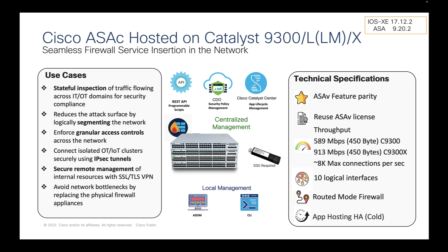In terms of performance, we can get up to 930 Mbps throughput with the 9300X models and approximately 8,000 connections per second.